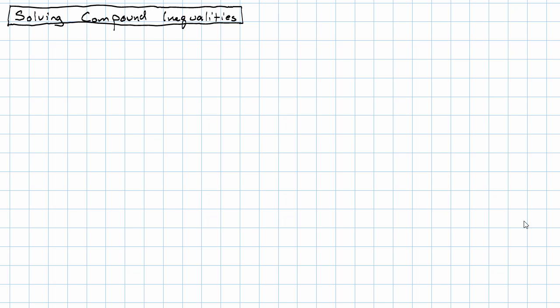So far, the compound inequalities that we've seen have all been in the simplest possible form. They've all just been in the form variable compared to a number. What if we have a compound inequality that we need to solve?